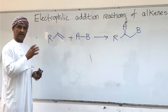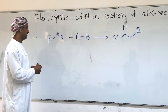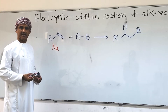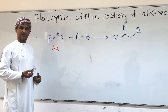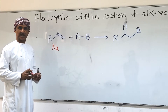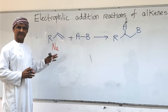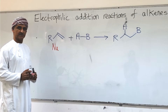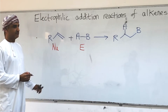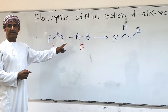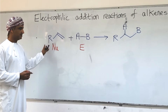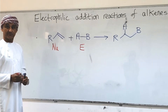In electrophilic addition reactions of alkenes, alkenes behave as nucleophiles because they contain a carbon-carbon double bond which consists of a carbon-carbon pi bond. There is electron density in the carbon-carbon double bond which gives alkenes this nucleophilic character. The electrophile adds to the carbon-carbon double bond, which is why the reaction is described as electrophilic addition.